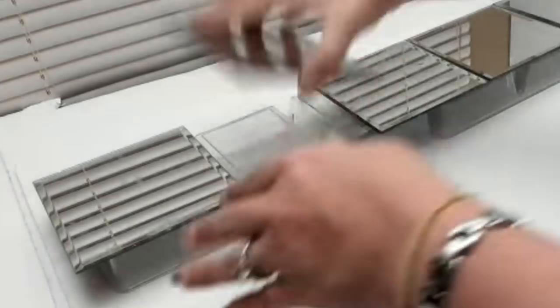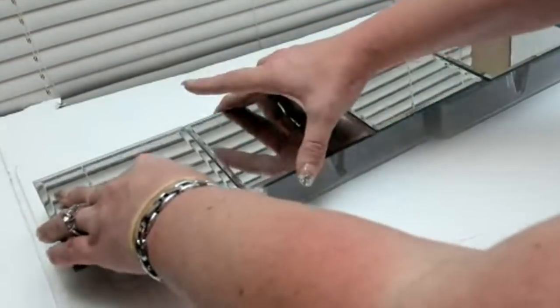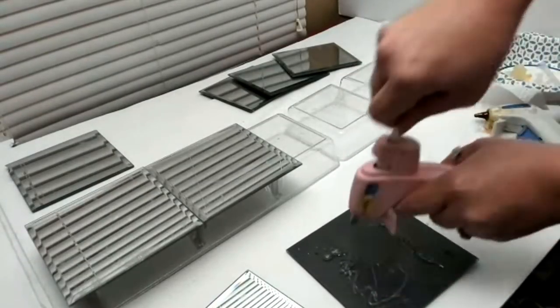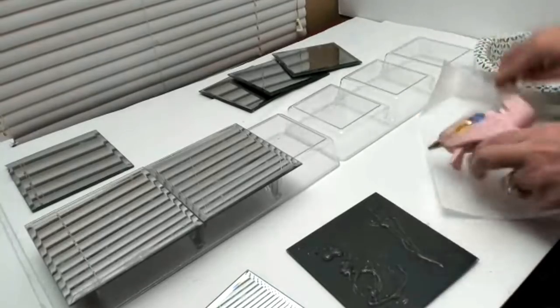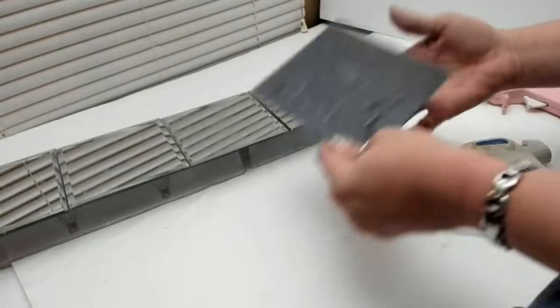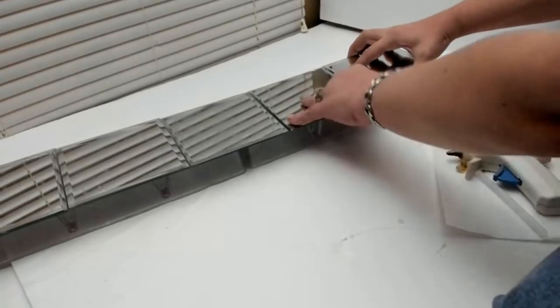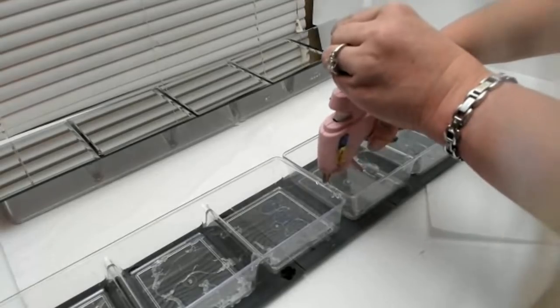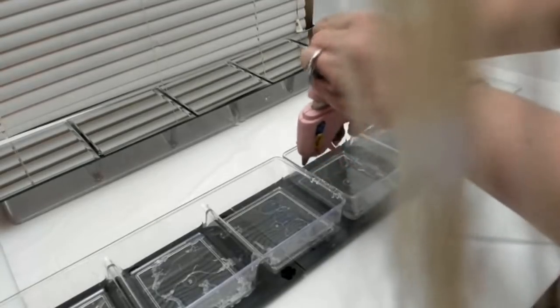When you get to the seam where the seam of the two trays come together, you want to make sure to get plenty of glue on both sides of the middle mirror. After you've applied your fifth mirror, just flip the unit over and add hot glue where that seam of the containers meet. This will give it a little bit more stability and make it more of one piece.